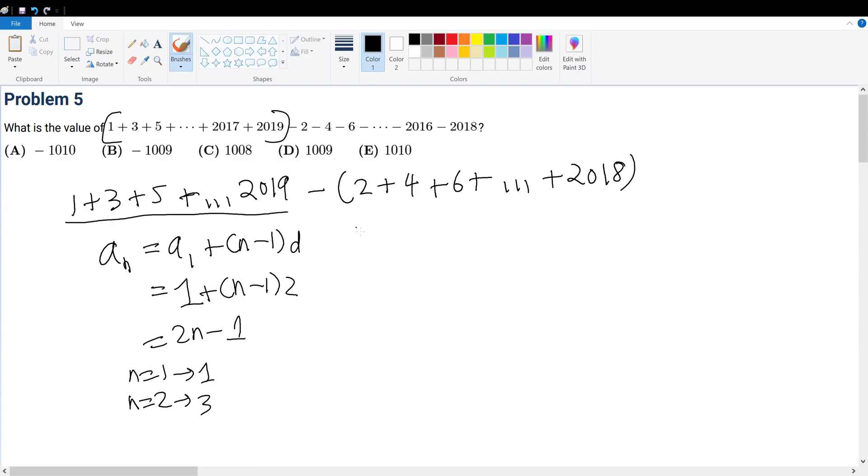But now we have to find the sum. The summation is equal to the first term plus the last term times the number of terms divided by 2 for an arithmetic series.